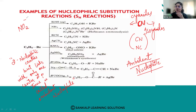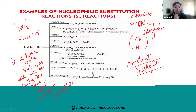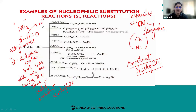Another example of an amphident nucleophile is NO₂⁻. It can link from oxygen or from nitrogen. When it links through oxygen, it forms alkyl nitrites; when it links through nitrogen, it forms nitroalkanes.